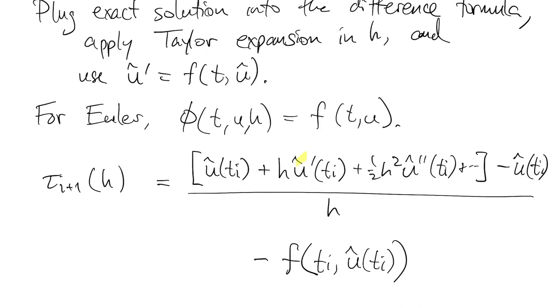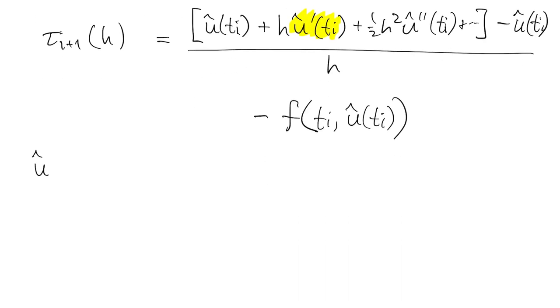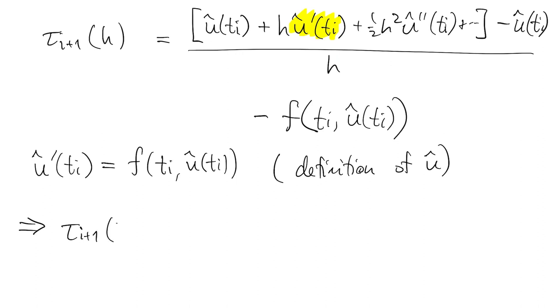Here we see u hat prime popping up. Really, the only thing we know about u hat is that it satisfies the ODE, so we'll use that. When you look at everything, that means it actually cancels out the f term that comes at the end.